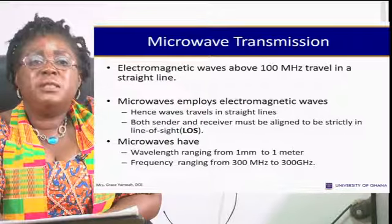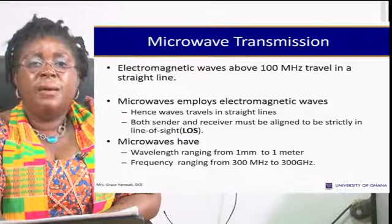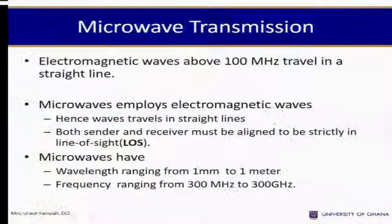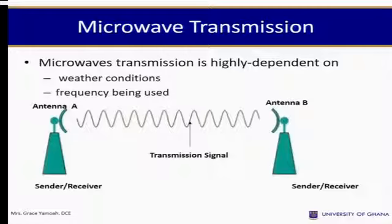Electromagnetic waves above 100 MHz travel in a straight line. Microwave transmission employs electromagnetic waves, so the wave travels in straight lines, meaning both sender and receiver must be aligned in a line of sight. Microwaves have wavelengths ranging from 1 mm to 1 m, and frequencies from 300 MHz to 3,000 GHz. Microwave transmission is highly dependent on weather conditions and the frequency being used.